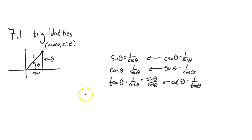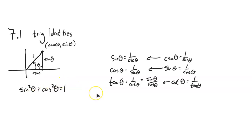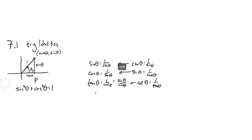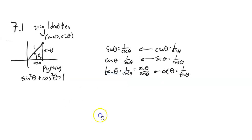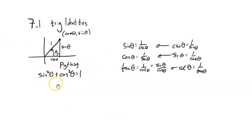Notice we have a right triangle where one side is cosine and the other side is sine. The Pythagorean theorem tells us a² + b² = c². So sine squared plus cosine squared — or cosine squared plus sine squared — equals 1 squared, which is 1. That is our first trig identity: it's the Pythagorean identity, showing how sine and cosine are related through the Pythagorean theorem.